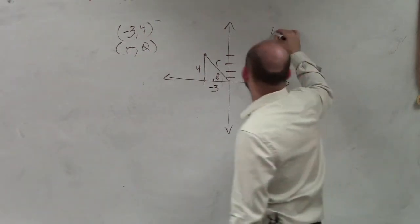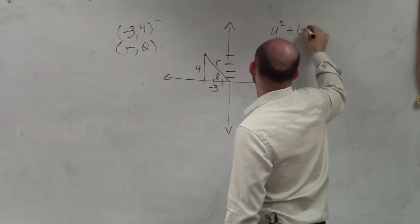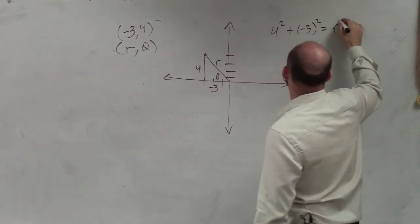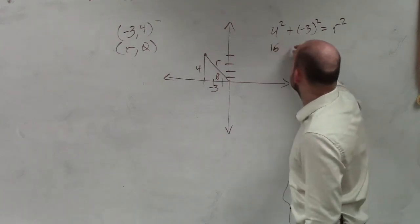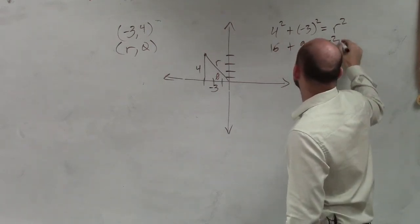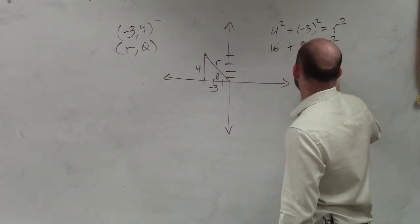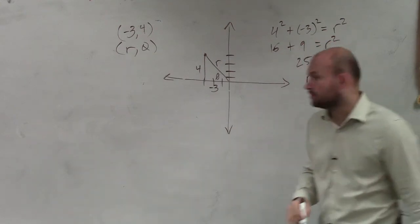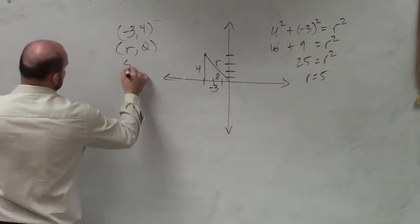Of course we can. 4 squared plus negative 3 squared equals r squared. 16 plus 9 equals r squared. 25 equals r squared. r equals 5. So now I know that's 5.